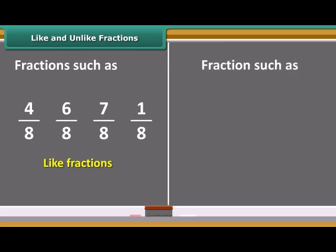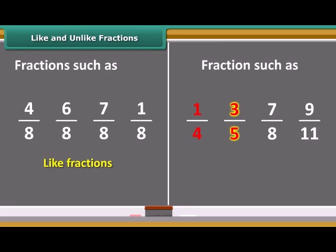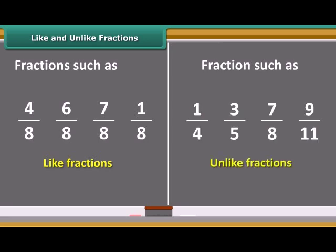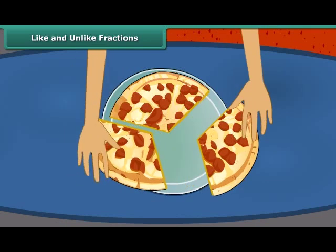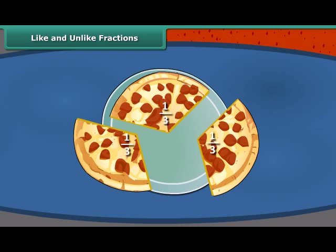Fractions such as 1 upon 4, 3 upon 5, 7 upon 8, and 9 upon 11 with different denominators are called unlike fractions. Looking at the question we earlier asked, we can say that each of them — Rahul, Rima, and Nina — received one third part of the pizza. Notice that this is also an example of like fractions.